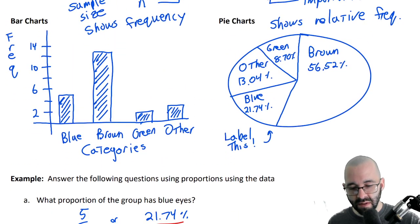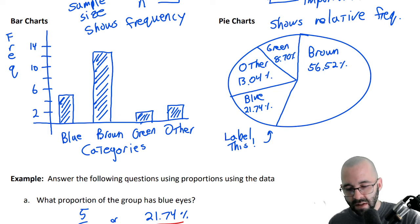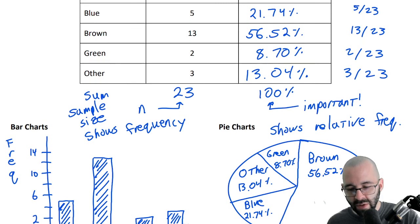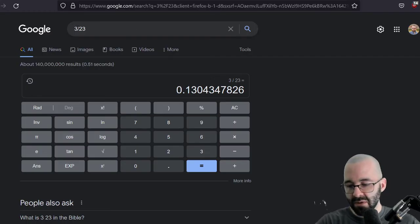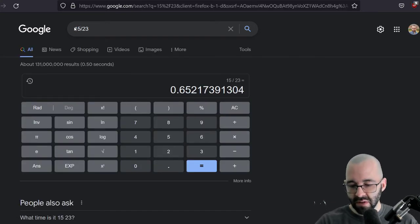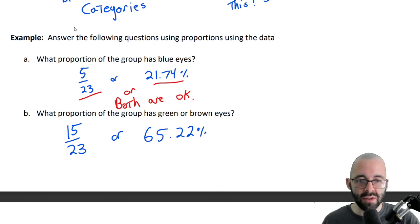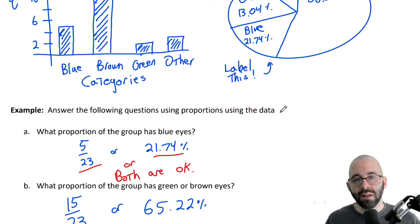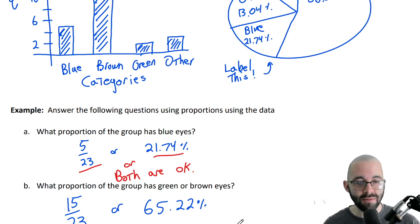What proportion has green or brown eyes? You just add them together — that's 15 out of 23, or about 65.22%. You get a more precise value if you type it into a calculator. And that's frequency tables, bar charts, and pie charts — a little introduction on displaying qualitative or categorical data and talking about proportions. Remember, categorical data has to do with proportions, whereas quantitative data we'll oftentimes talk about means.